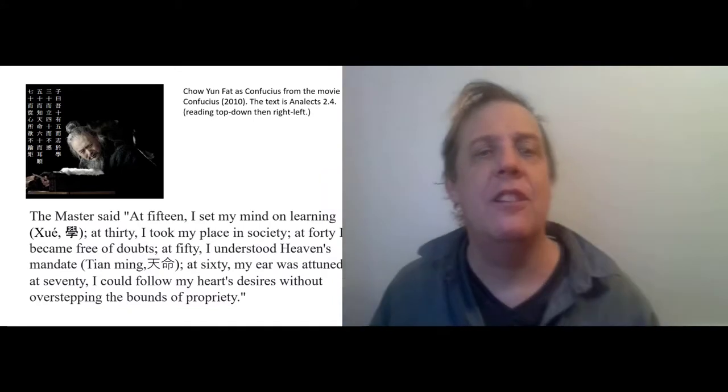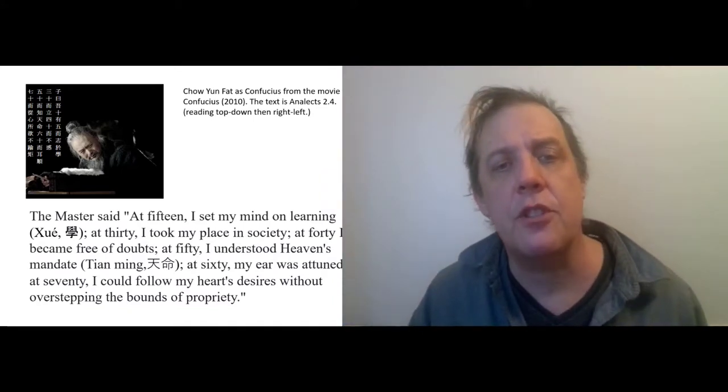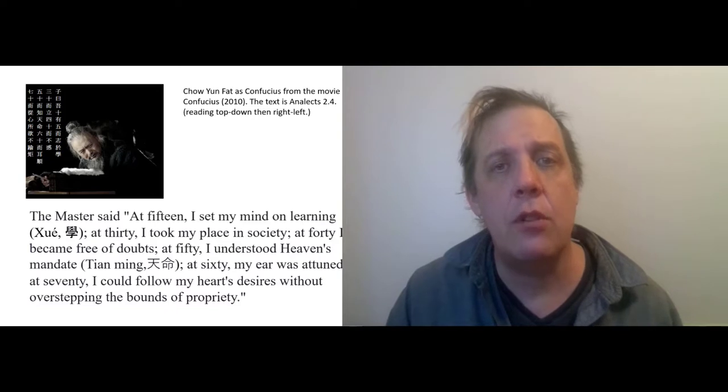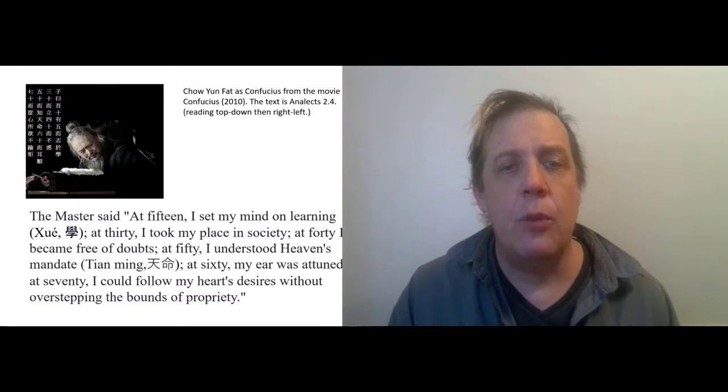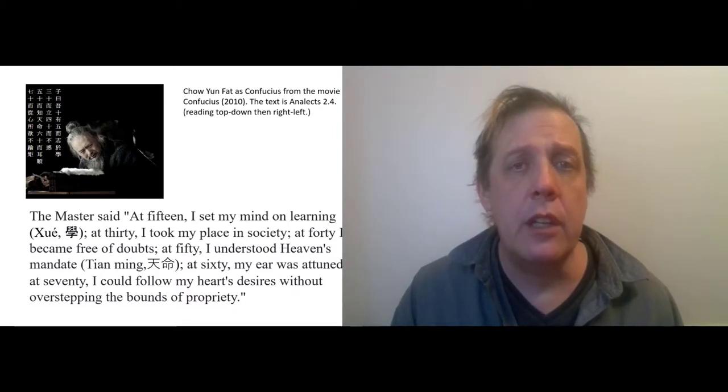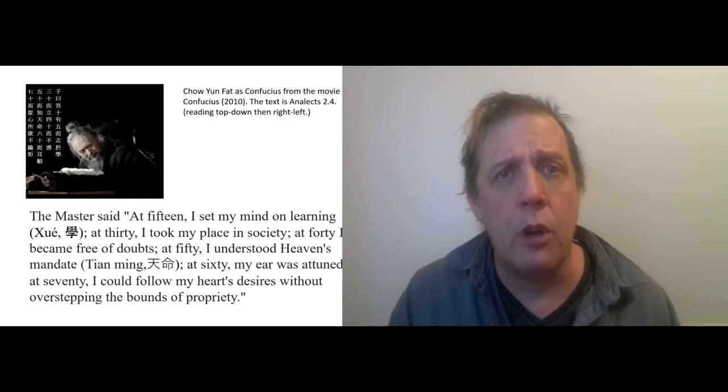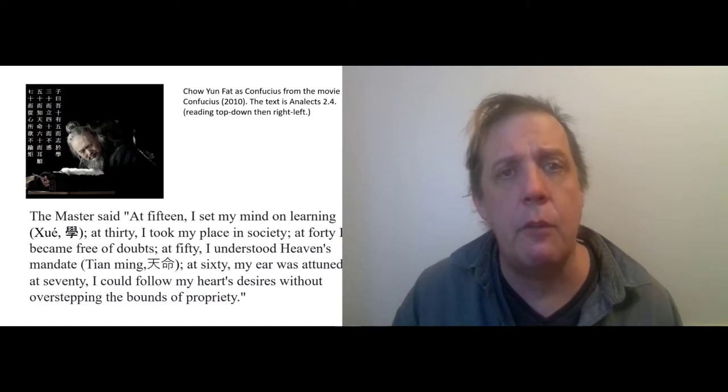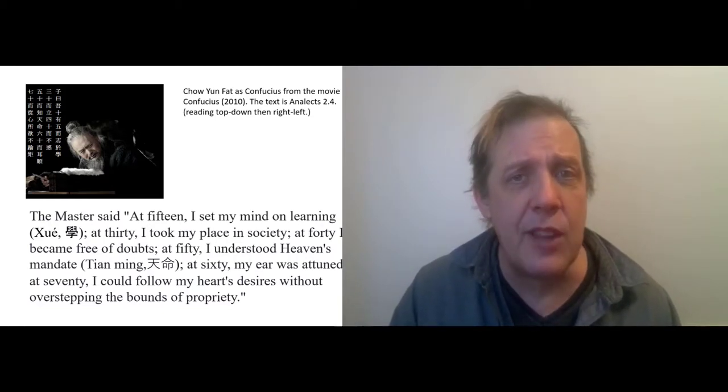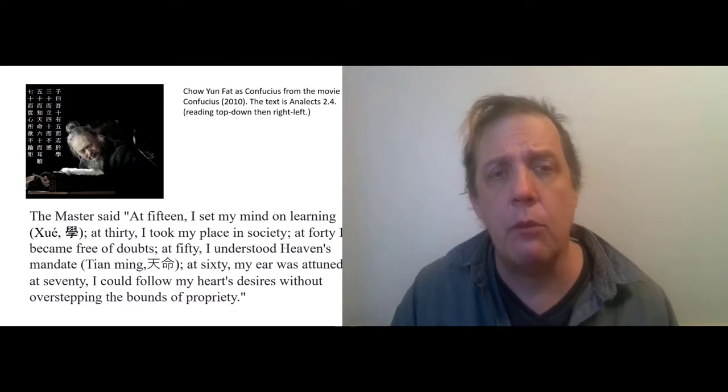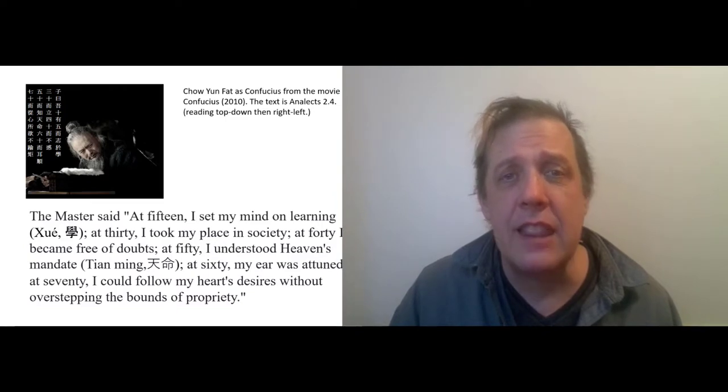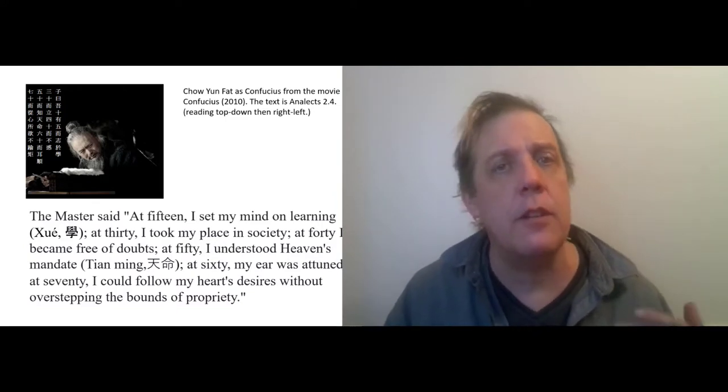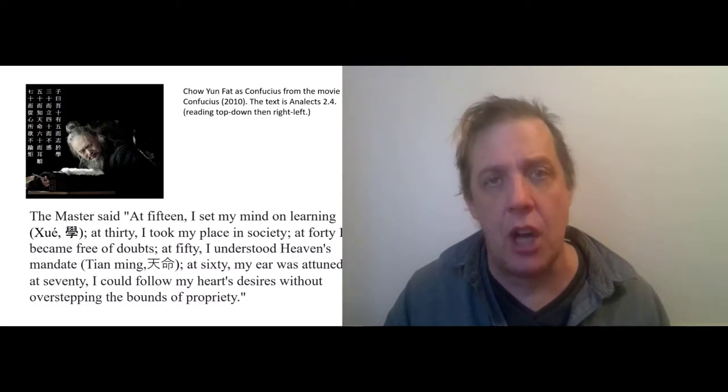So Confucius is learning throughout his life and growing, and he's describing this process. And it starts out, actually, with just deciding to be a learner. And when he says I set my mind on learning, he is largely talking about what we would call book learning. His books are different. But maybe you're thinking in your own life about doing the same thing, not the same thing, but the same kind of thing, but with a different kind of learning. At 30, he takes his place in society. I think that means that he's started a family. He's got a full-time job. He's settled.